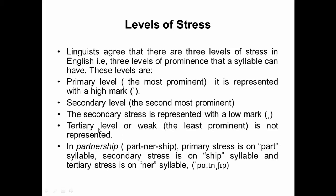Look at the word 'partnership' — it has three syllables. The primary stress is on 'part.' The secondary stress is on 'ship,' shown with a low diacritic mark below. The syllable 'ner' is the tertiary syllable, which is why it is not marked at all. So this demonstrates primary, secondary, and tertiary levels of stress.